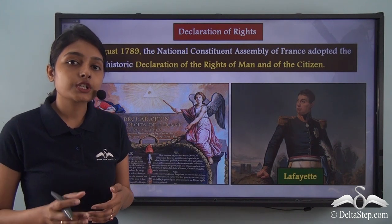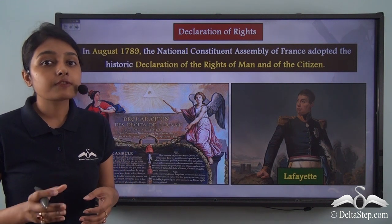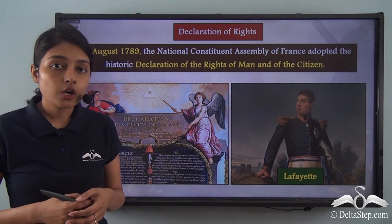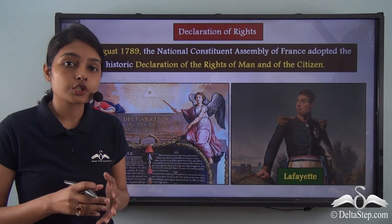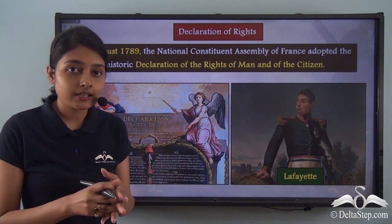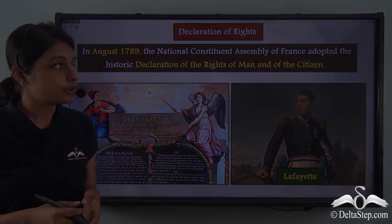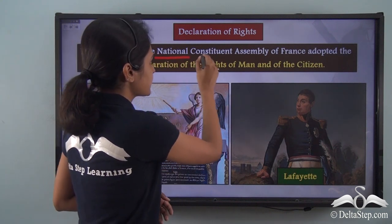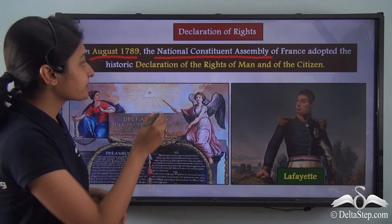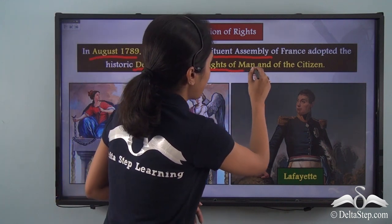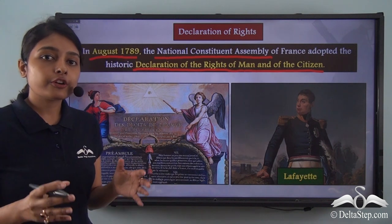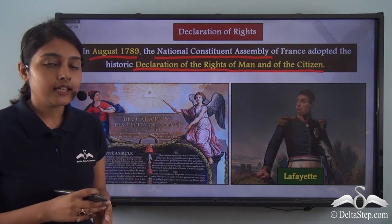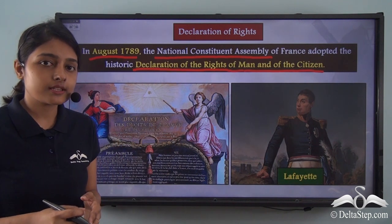When the National Constituent Assembly was formed, it was tasked to draft a constitution for France. In August of 1789, the National Constituent Assembly of France adopted the Declaration of the Rights of Man and of the Citizen. Before forming a constitution, it was this Declaration of the Rights of Man and of the Citizen that the National Constituent Assembly adopted.